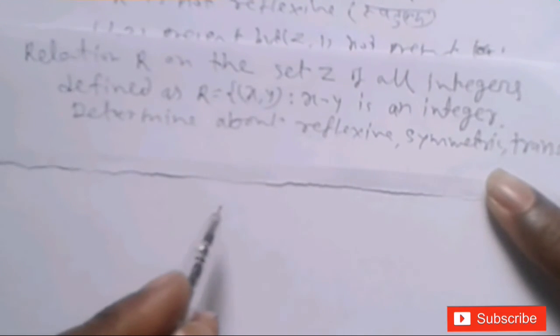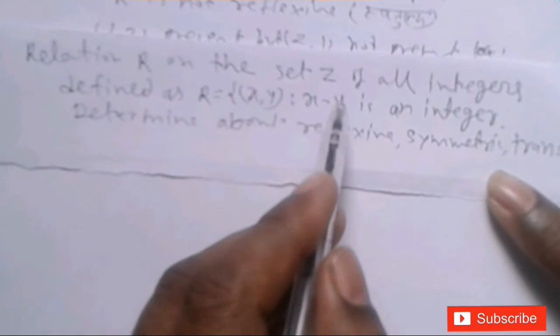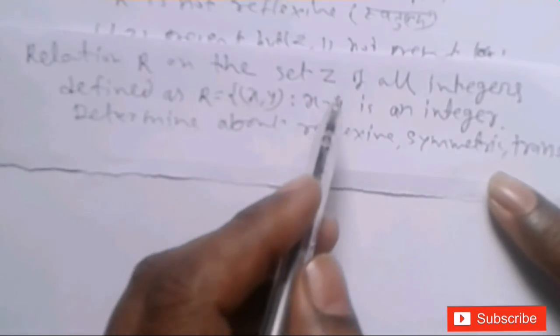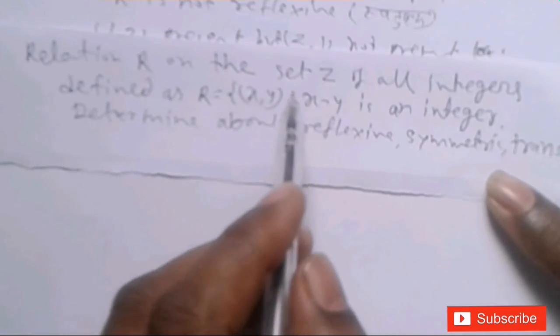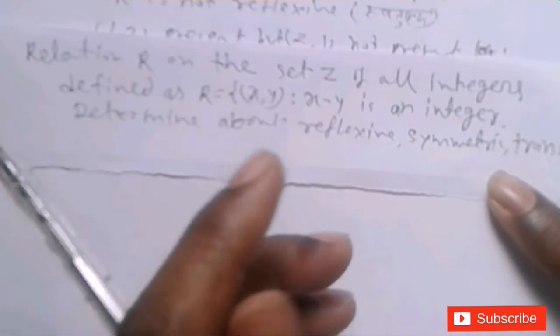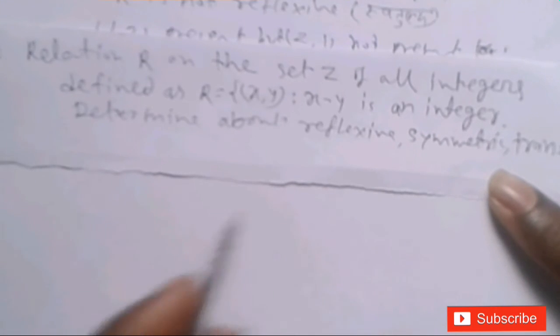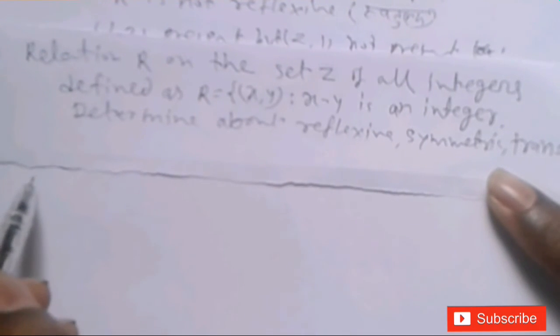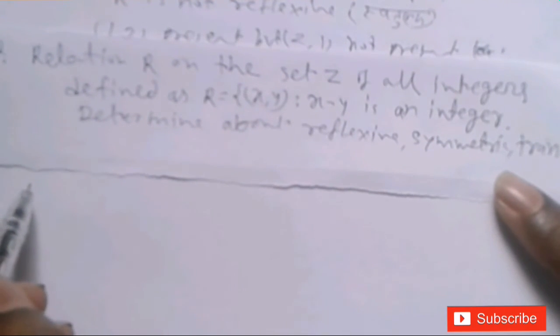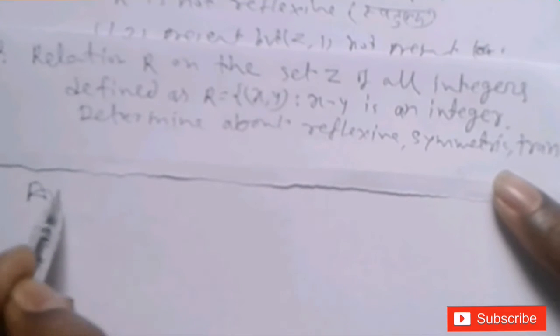Integers mean से plus-minus की numbers होती हैं, जैसे 0, -1, -2, -3 से negative infinite तक जाएगा, और +1, +2, +3 से positive infinite तक जाएगा। तो यह है यहाँ पर, और आपका answer start होता है।